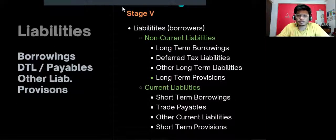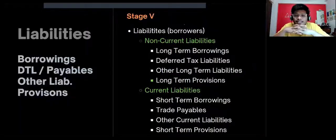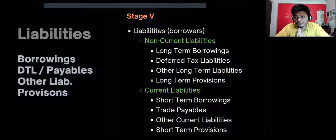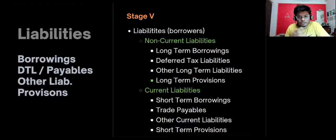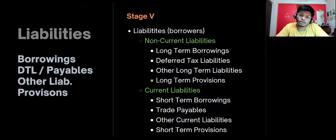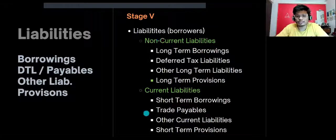Now let's talk about liabilities. Liabilities are money you borrow — when you start a business, if you invest your own money that's equity, but if you take a loan, that's a liability because you have the obligation to pay it back. Liabilities can be of two types: non-current liability and current liability.